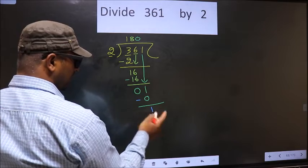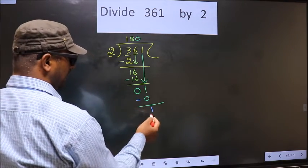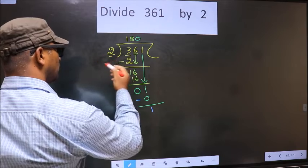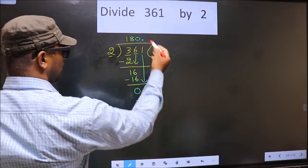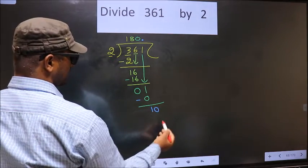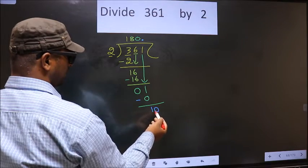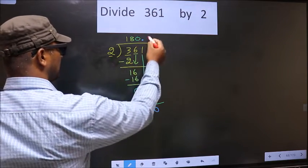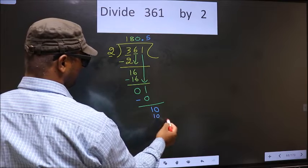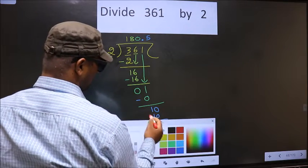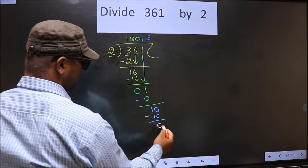Over here we did not bring any number down. 1. And 1 is smaller than 2. So now you put a dot and take 0 here. So here 10. When do we get 10 in the 2 table? 2 fives, 10. Now you subtract. 10 minus 10, 0.